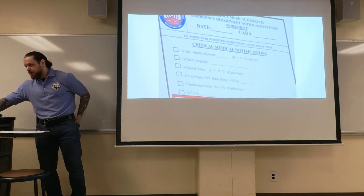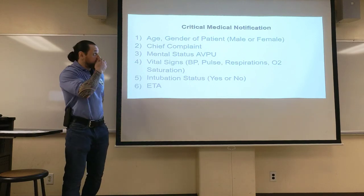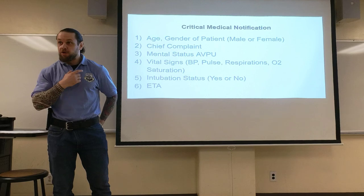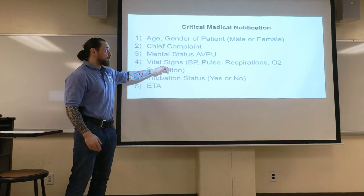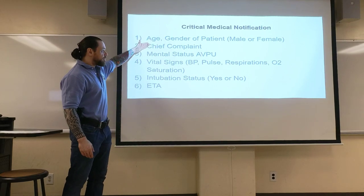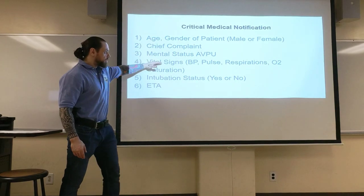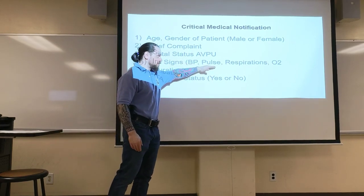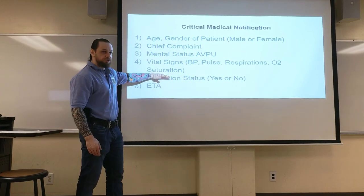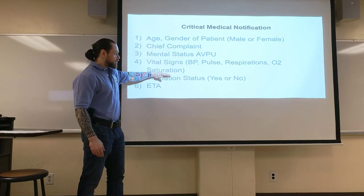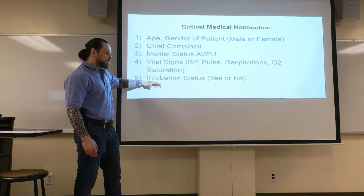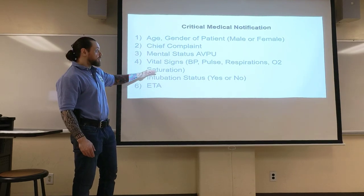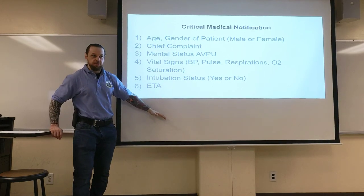For the critical medical notification: call up, state your unit number, dispatcher acknowledges. Then state: 'Critical medical notification — [age]-year-old [gender] patient, chief complaint [e.g., chest pain], patient status [alert/verbal/pain/unresponsive], vital signs — blood pressure, pulse rate, respiratory rate, O2 saturation with or without oxygen.' For example: 'Sat is 95% on 15 liters.' State whether the patient is intubated or not. Then state your ETA — for example, 'ETA is 10 minutes.' That's how concise this should be.